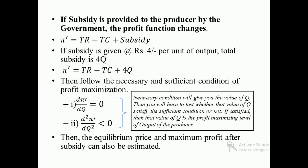If the government provides a subsidy to producers, the profit function becomes TR minus TC plus subsidy. For example, a subsidy of rupees 4 per unit of output gives a total subsidy of 4q, so the profit function becomes pi dash equal to TR minus TC plus 4q. We then apply the necessary and sufficient conditions of profit maximization to find the profit maximizing output, equilibrium price, and maximum profit after subsidy.